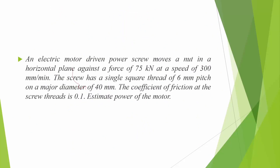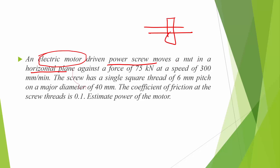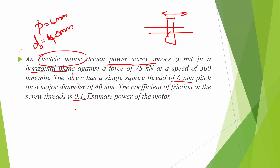The first problem: An electric motor-driven power screw moves a nut in a horizontal plane. The screw has a single square thread of 6 mm pitch, so small p = 6 mm. Since it is a single thread, lead equals pitch. Major diameter D_outside = 40 mm. The coefficient of friction at the screw thread is μ = 0.1.